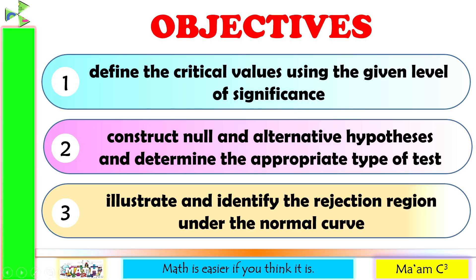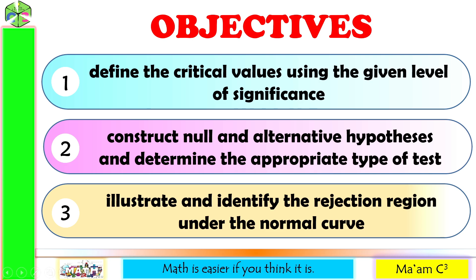Our objectives in this lesson are the following: define the critical values using the given level of significance, construct null and alternative hypothesis and determine the appropriate type of test, and illustrate and identify the rejection region under the normal curve.